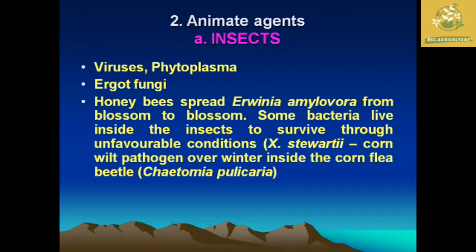Animate agents are living agents. Insects are particularly important — both viral and bacterial diseases are majorly transmitted by insects, including viruses, phytoplasma, and bacteria, as well as ergot fungi. For example, honeybees spread Erwinia amylovora from blossom to blossom, spreading disease from one plant to another. Some bacteria live inside insects and survive unfavorable conditions, then when the insect sucks sap from a healthy plant, the virus is transported into that healthy plant.